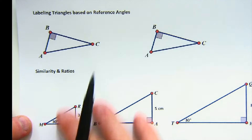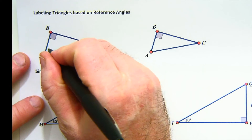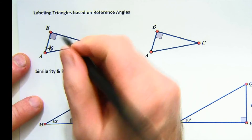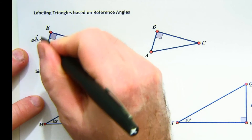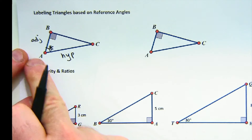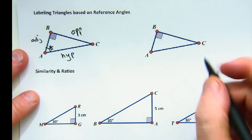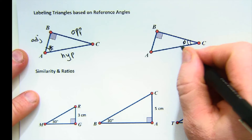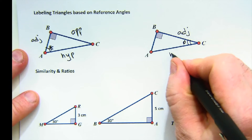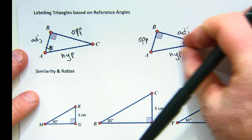The heart of trigonometry is labeling triangles correctly, and labeling all depends on the reference angle. If we're using angle A as our reference angle, our adjacent side and hypotenuse are the two that form that angle. The opposite side is across from the angle we're using as our reference. If we were over in a different corner as our angle of reference, our adjacent would shift accordingly, the hypotenuse is always the longest side across from the 90, and the opposite is the one that does not form that angle.